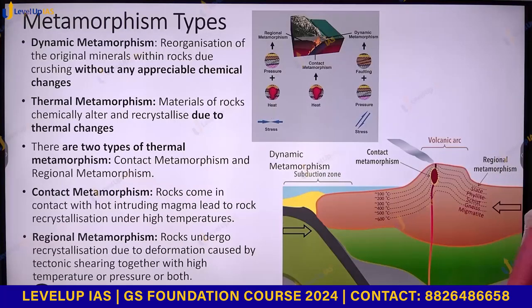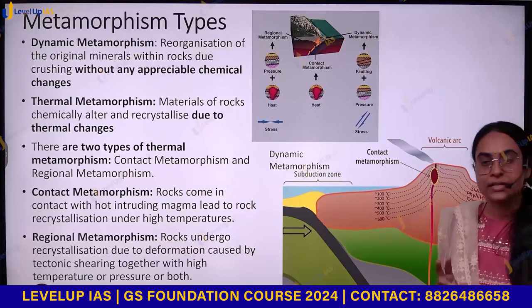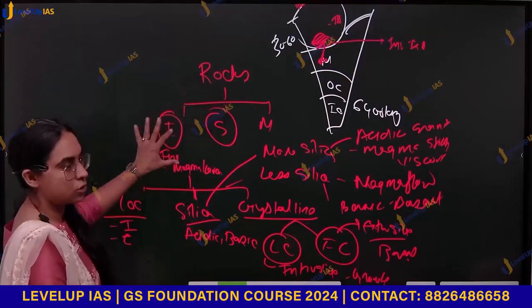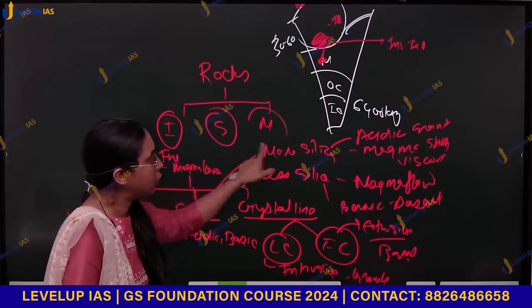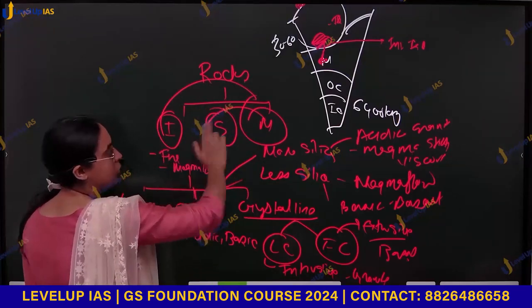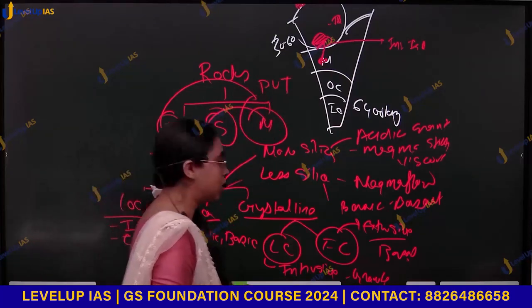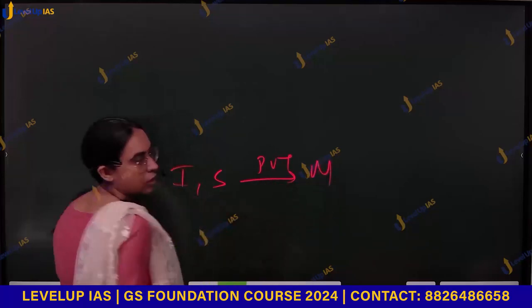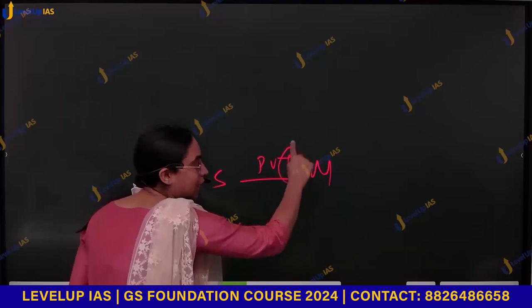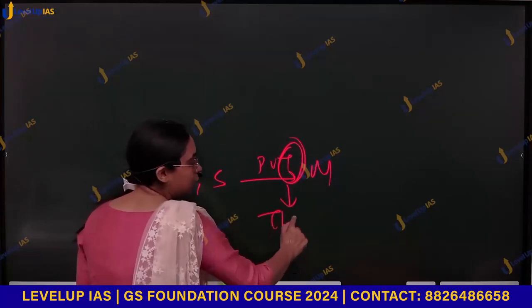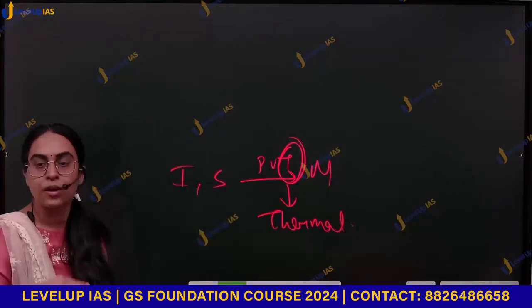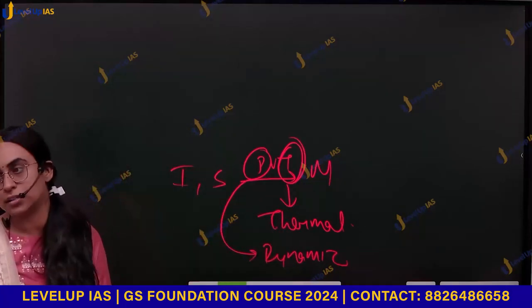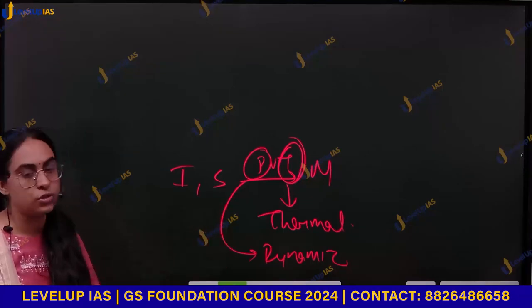Igneous rock or sedimentary rocks undergoing PVT changes — pressure, volume, and temperature changes — form metamorphic rock. If the metamorphic rock is formed because of temperature change, it is thermal metamorphism. If it is because of pressure change, it is dynamic metamorphism.